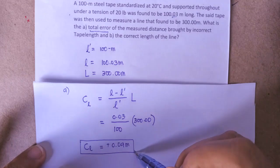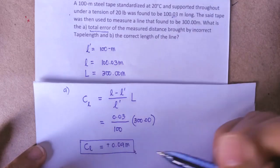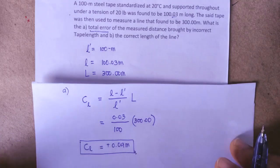So this is the answer for item a: the total error of the measured distance.